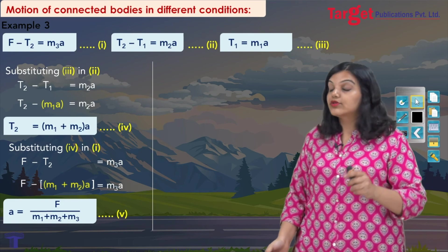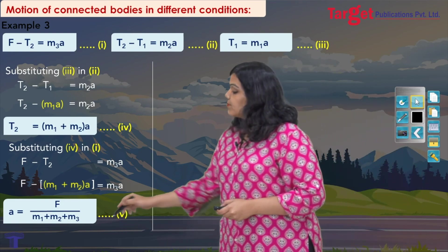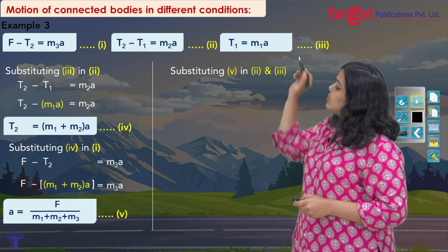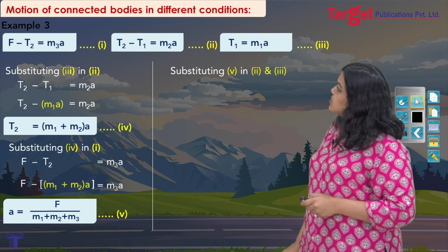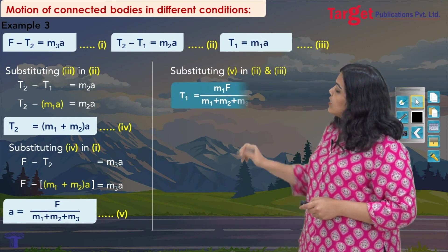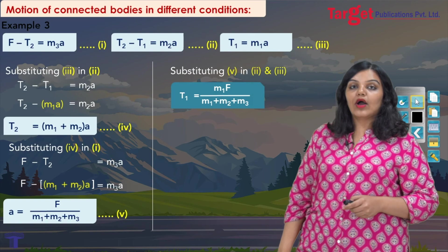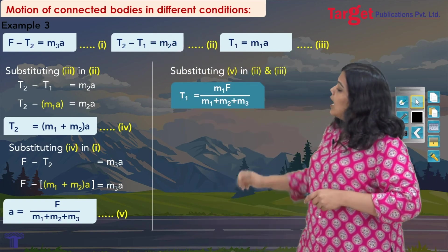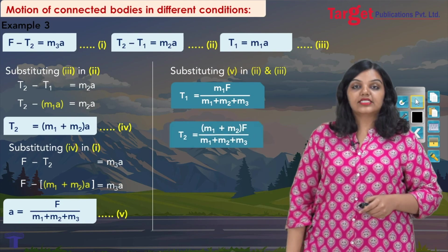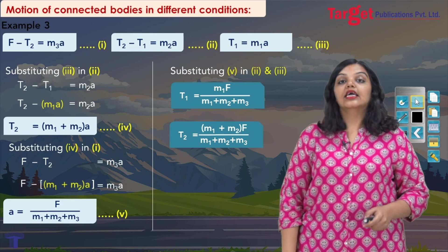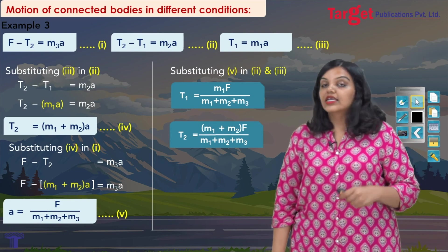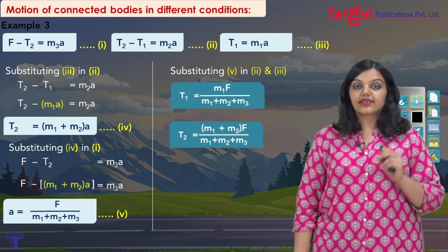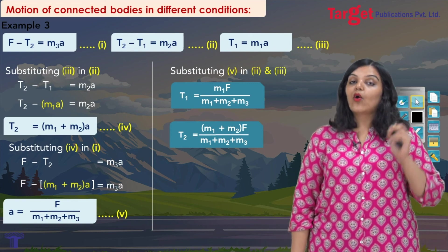Finally, using this expression for acceleration and substituting into equations 2 and 3: substituting into equation 3 gives T1 equals m1F divided by (m1 plus m2 plus m3). Taking that expression for T1 and substituting into equation 2 gives T2 equals (m1 plus m2)F divided by (m1 plus m2 plus m3). By now you have seen how to solve equations of motion in a very simple manner, as long as you are consistent with your sign convention — and remember that Newton's second law will always save you.